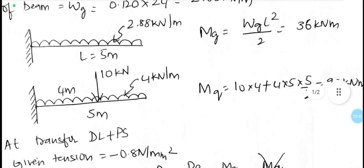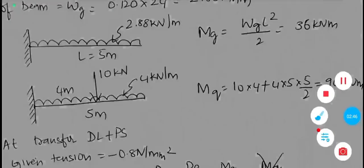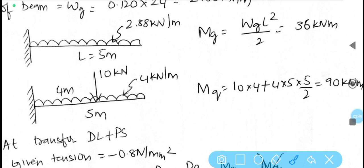In the problem, in addition to the uniformly distributed load there is one point load at 4 meter distance and one UDL also. For that you have to calculate accordingly. Moment at the fixed support: 10 into 4 plus 4 into span 5 into 5 by 2 gives bending moment due to live load case as 90 kilo Newton meter.